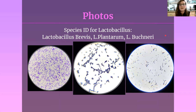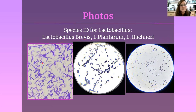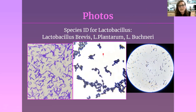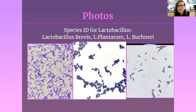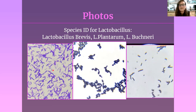Gram staining can take us further — for certain genera like Lactobacillus we can use cell shape to actually determine species. Lactobacillus brevis is generally thin, long, straight rods — occasionally a little bit of bend — and sometimes they chain. Lactobacillus plantarum is a little shorter and squatter and creates these little butterflies, these little tetrads. Lactobacillus buchneri tends to be smaller and shorter and end-heavy so it curves a little on the edges. Being able to identify Lactobacillus at the species level is really excellent.